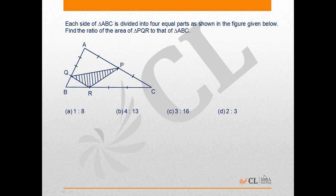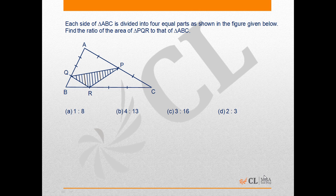In this problem, each side of triangle ABC is divided into four equal parts as shown in the figure below. We have to find the ratio of the area of triangle PQR to that of triangle ABC.